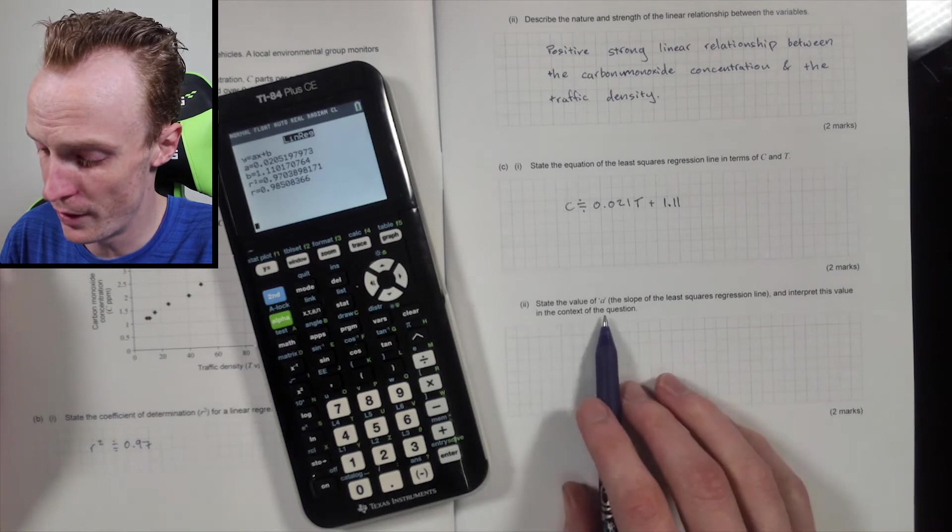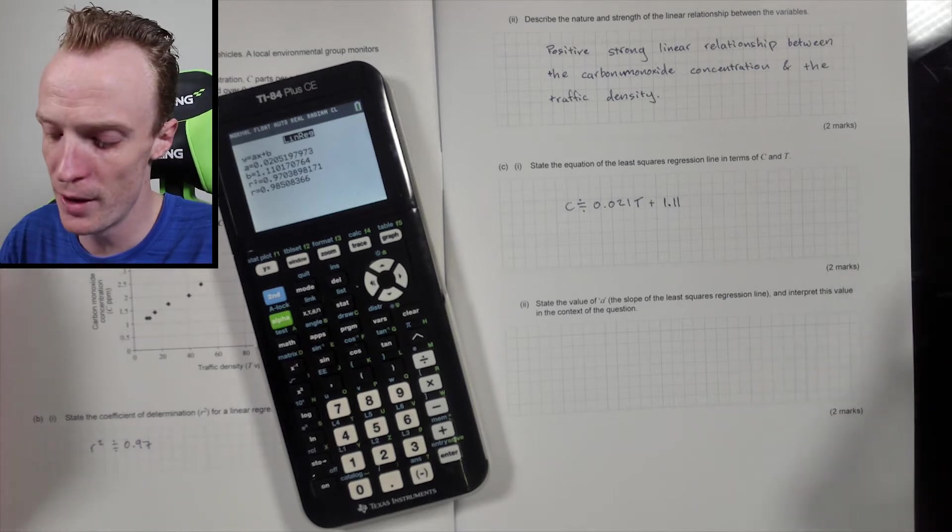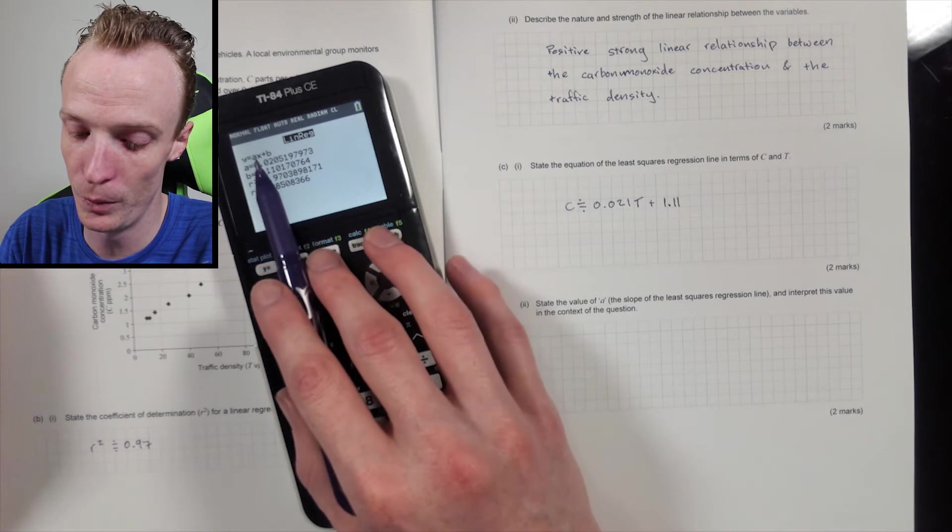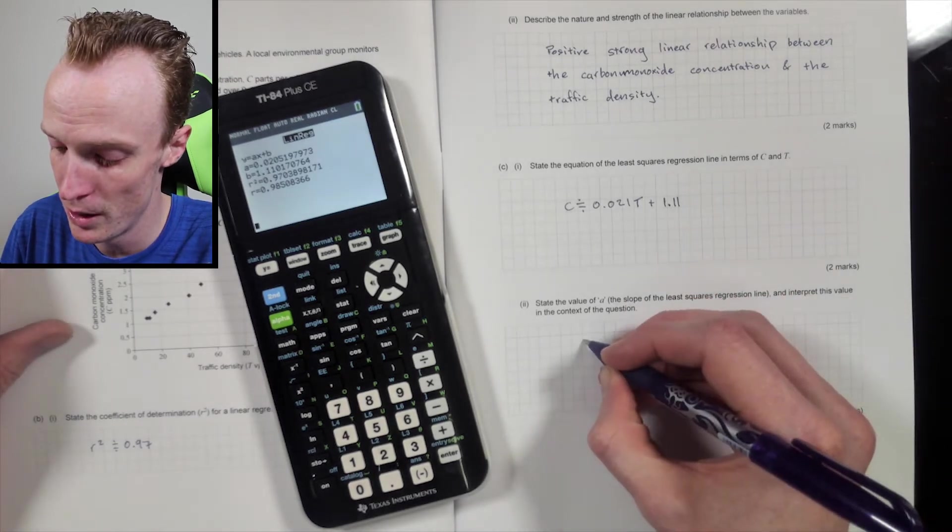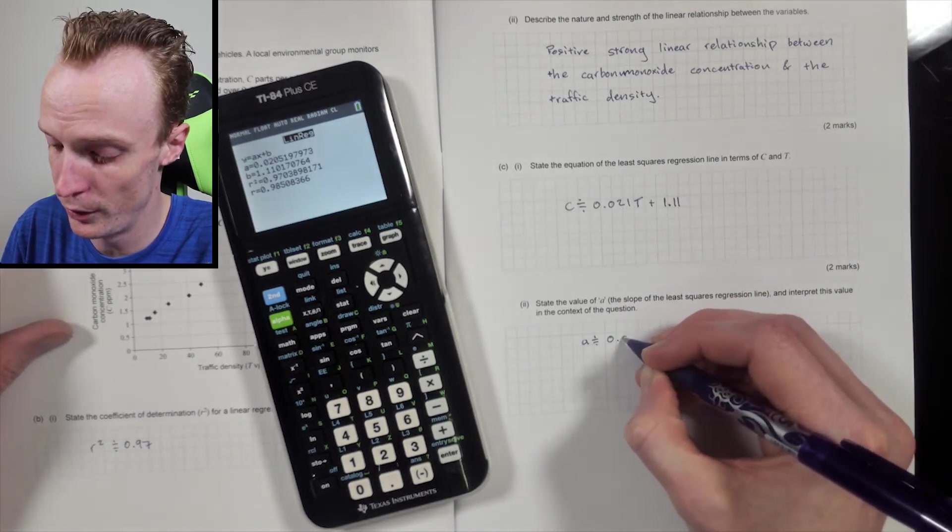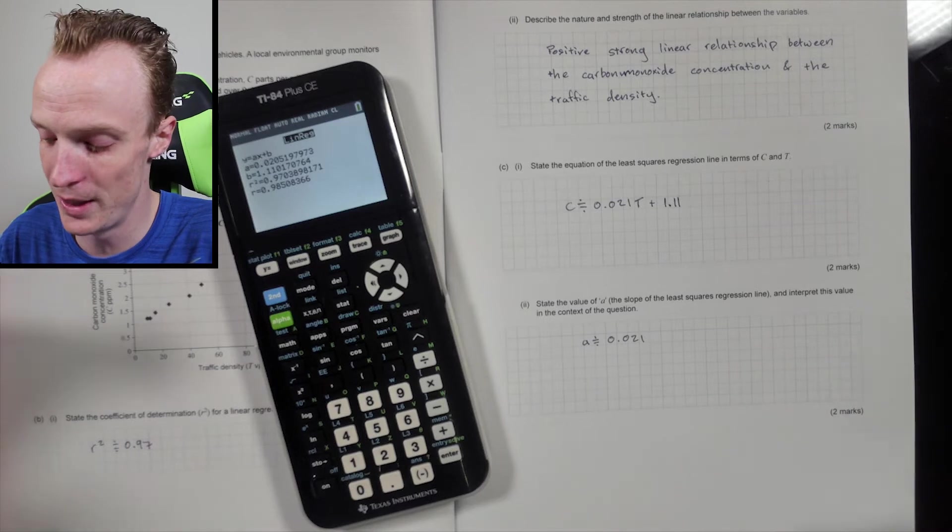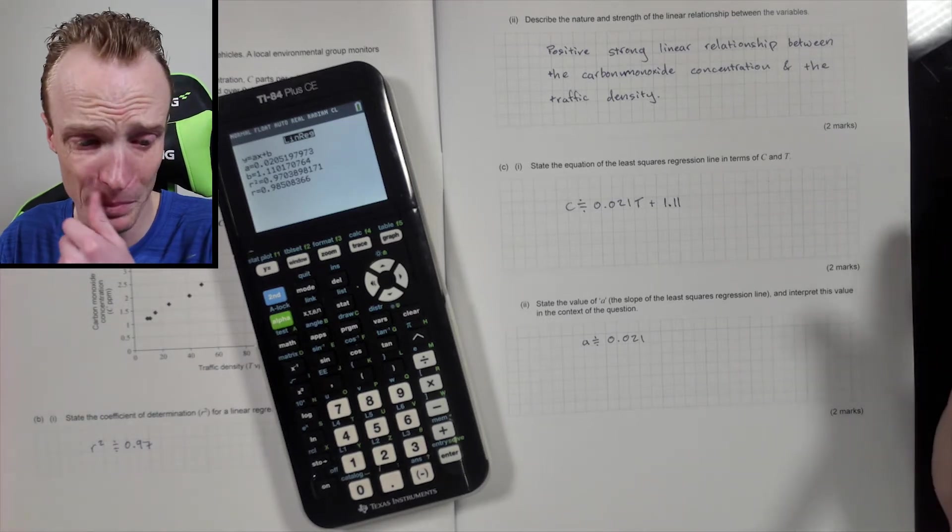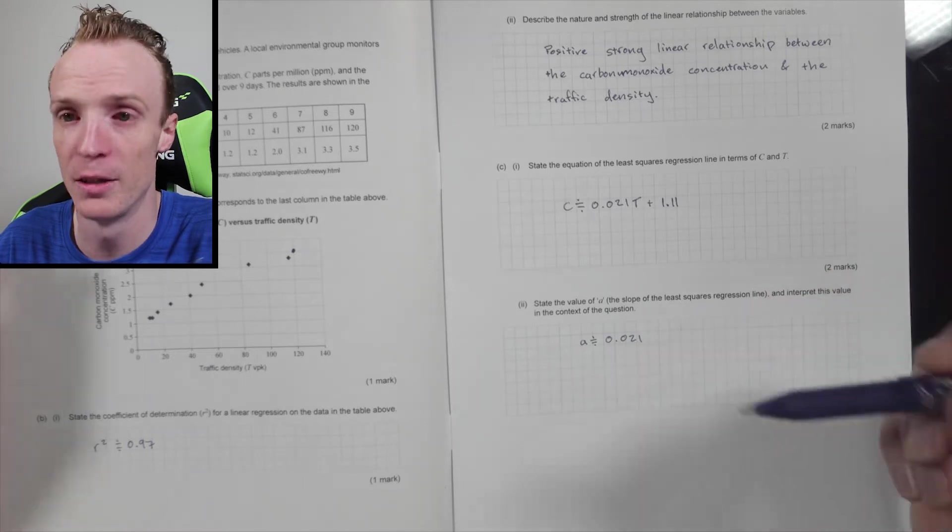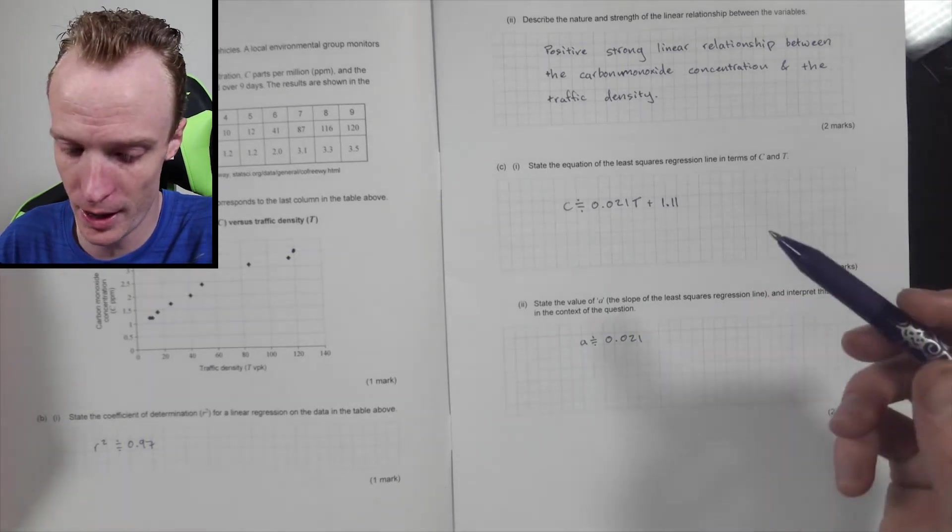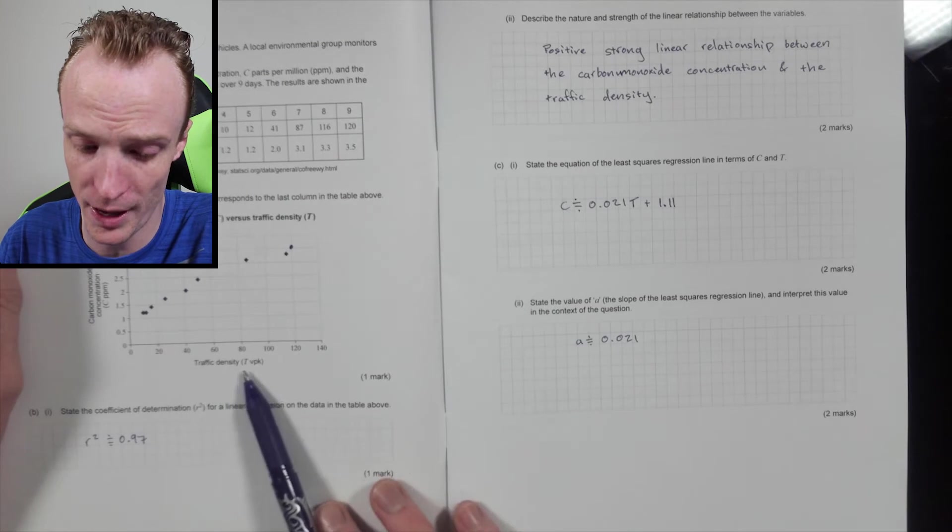Now state the value of a, the slope, and the least squares regression line. Interpret this value in context to the question itself. Now the a value is the value that's just before the x, that was represented in the calculator but the t here. So the a value is approximately 0.021. Now what that means is we've got to read the question itself and look at what does this value mean. It's the rate of change because it's the slope, so it means that for every one increase of the traffic density, it's going to result in approximately a 0.021 increase in the carbon monoxide concentration.